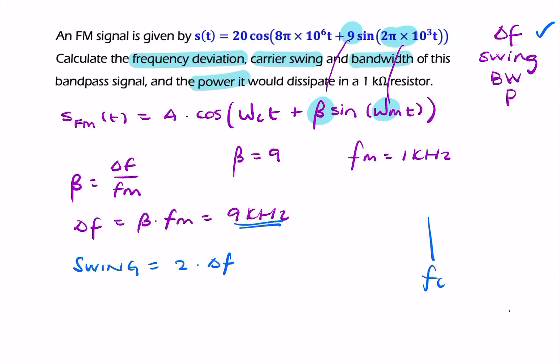You have your carrier frequency, and then you have a deviation on either side. You have delta f on either side. So that total is your swing. It's twice delta f, so it's simply 18 kilohertz.